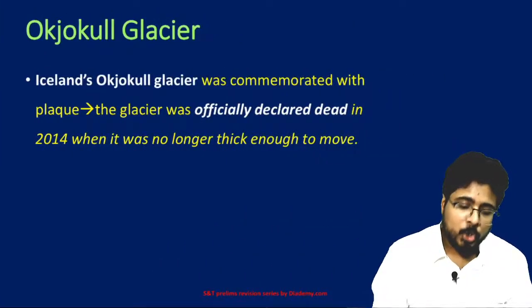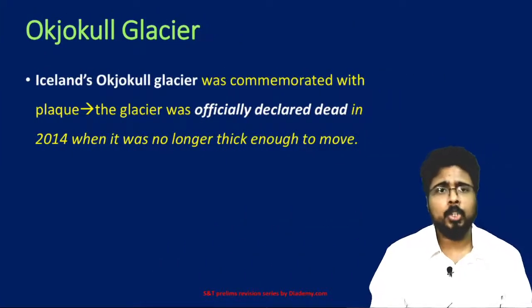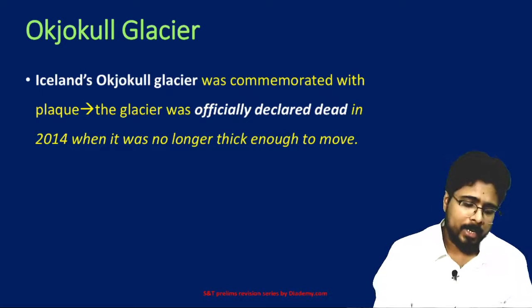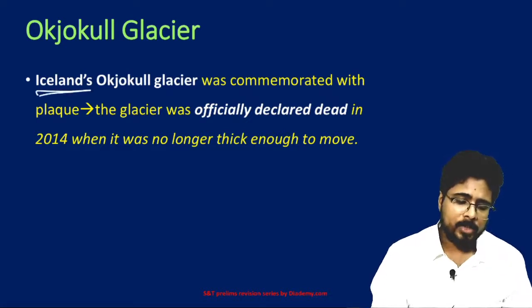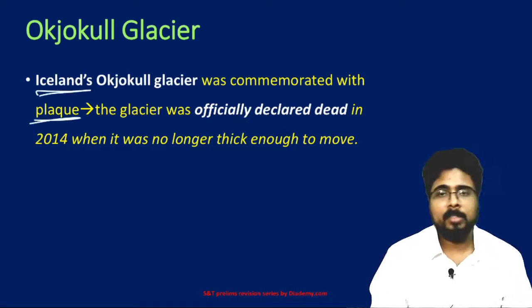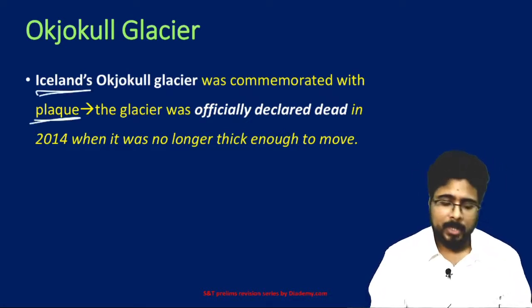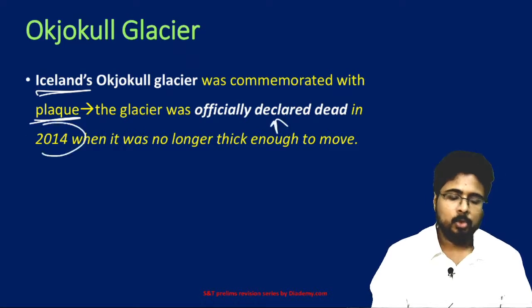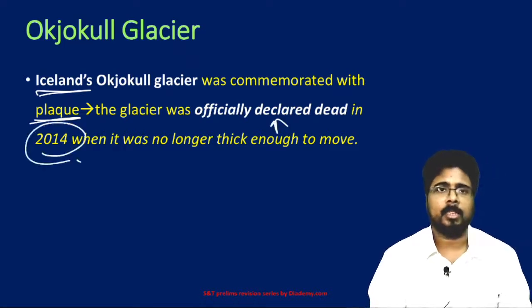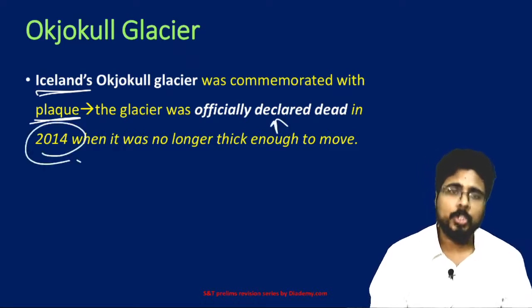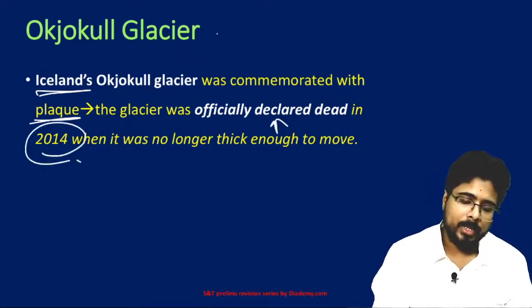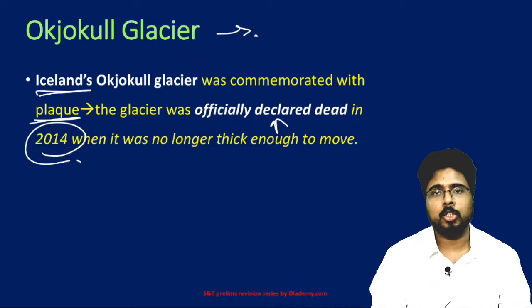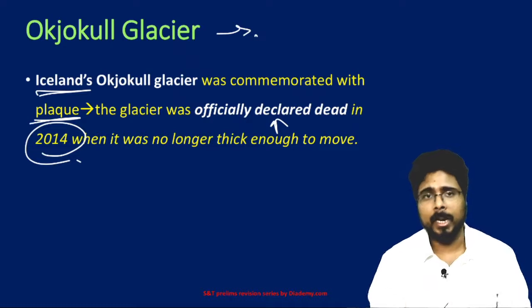Next, Okjökull Glacier. The Okjökull Glacier is in Iceland — it was recently commemorated with a plaque. This glacier was declared officially dead in 2014. So if the question is asked where the Okjökull Glacier is located, the answer is Iceland.